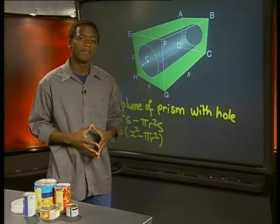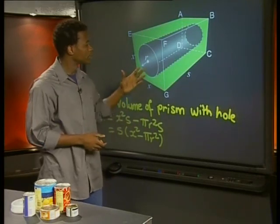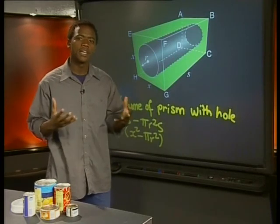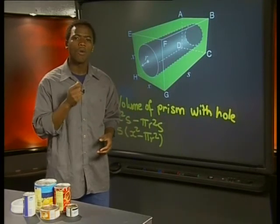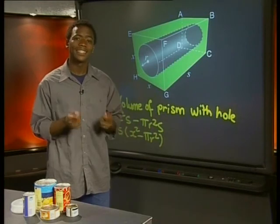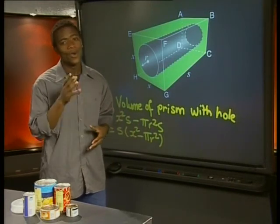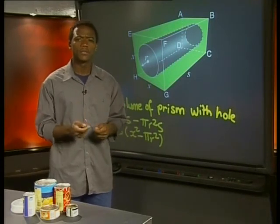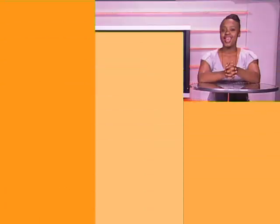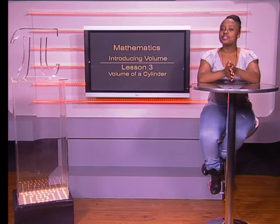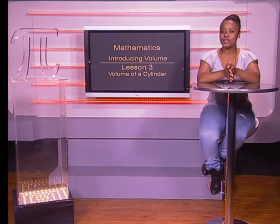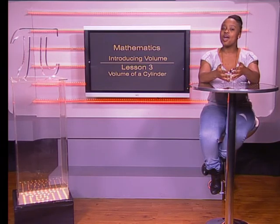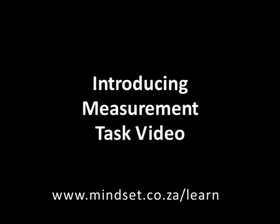So now we have a general formula for finding the volume of this prism. We can just substitute the real measurements into it when we get them. I hope this has shown you that we do not need actual measurements to work out a formula. We could now use this formula to compare the volume of similar prisms with different dimensions. Thank you for joining us. Remember to look at the tasks for this section in the introducing measurement task video. You'll also be able to learn more about measurement on our website at www.mindset.co.za/learn. Goodbye.